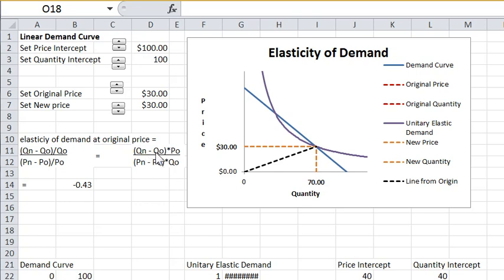And note this QN minus Q0 over PN minus P0 does not change as you move along the demand curve. This is the inverse of the slope of this, but the slope of this is a constant, so the inverse is also a constant. It doesn't change.